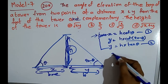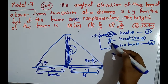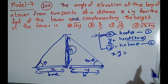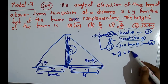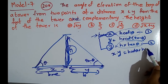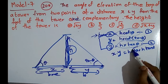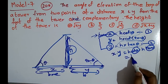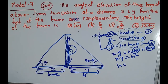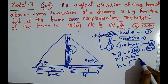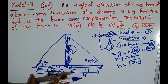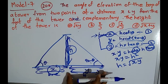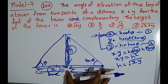By multiplying expression 1 and expression 2, the left-hand side gives x times y, and the right-hand side gives h·cot(theta) times h·tan(theta). Since cot(theta)·tan(theta) equals 1, we get x·y = h². Therefore, the height h = √(x·y). Just multiply the two distances from each point to the foot of the tower and take the square root.